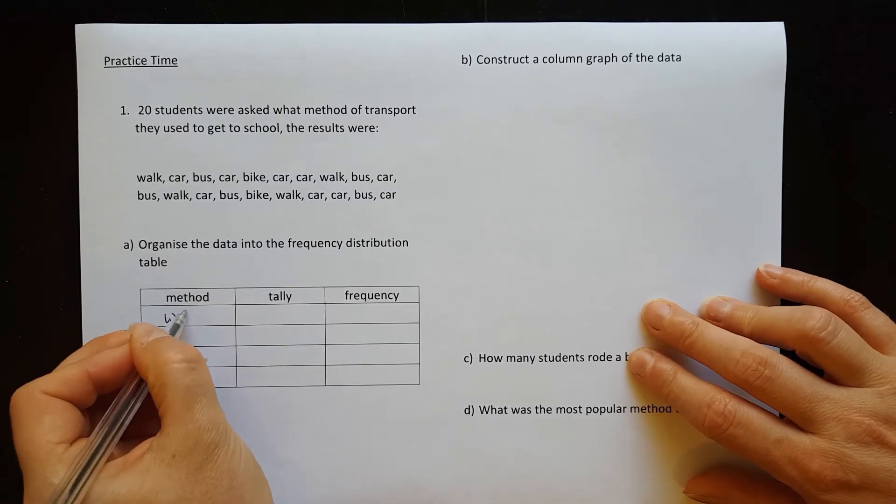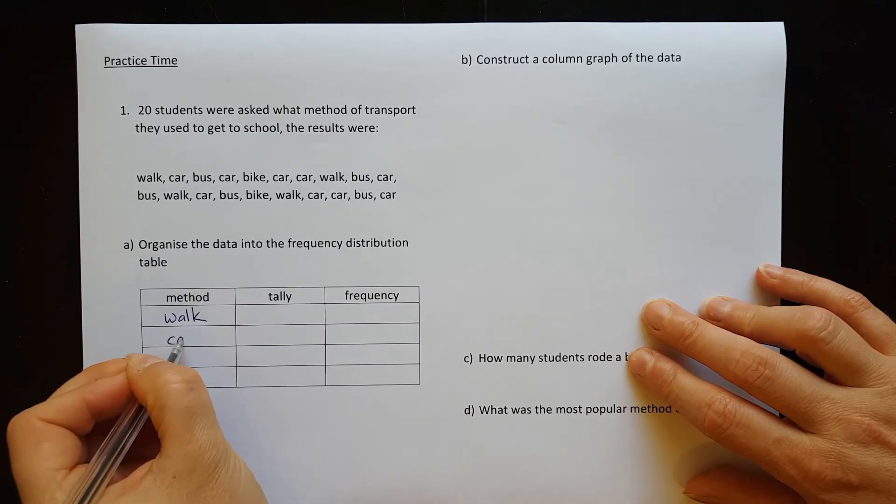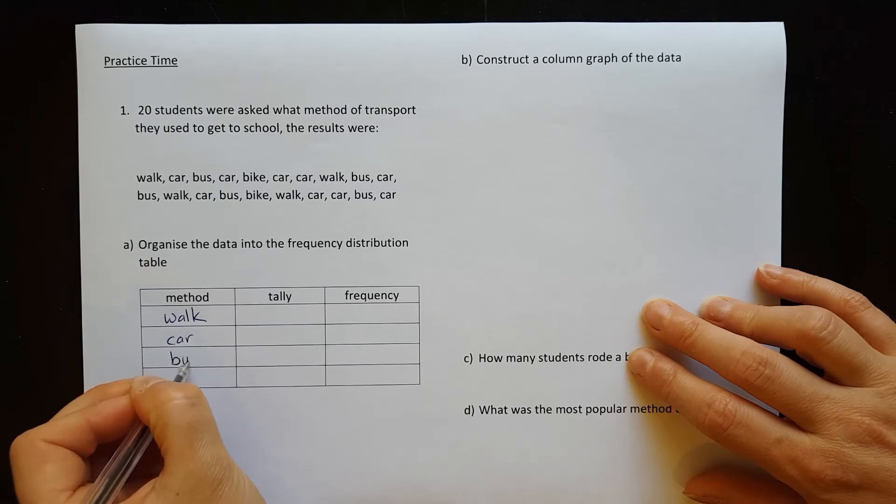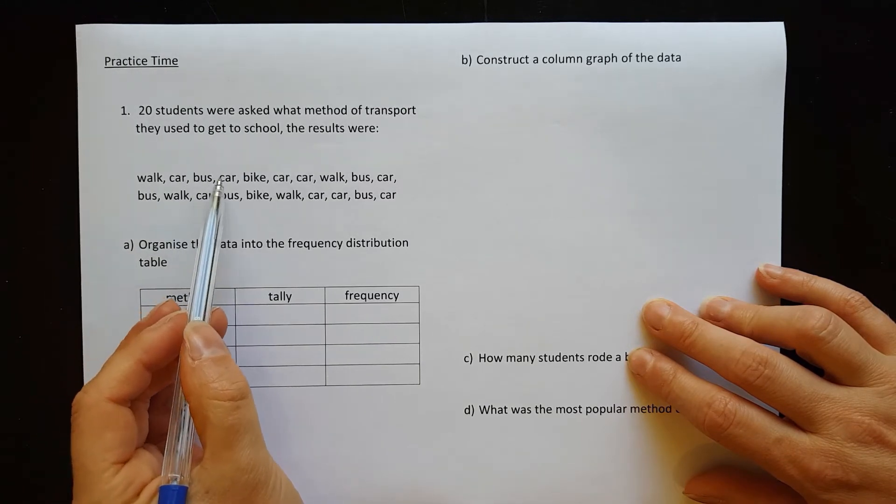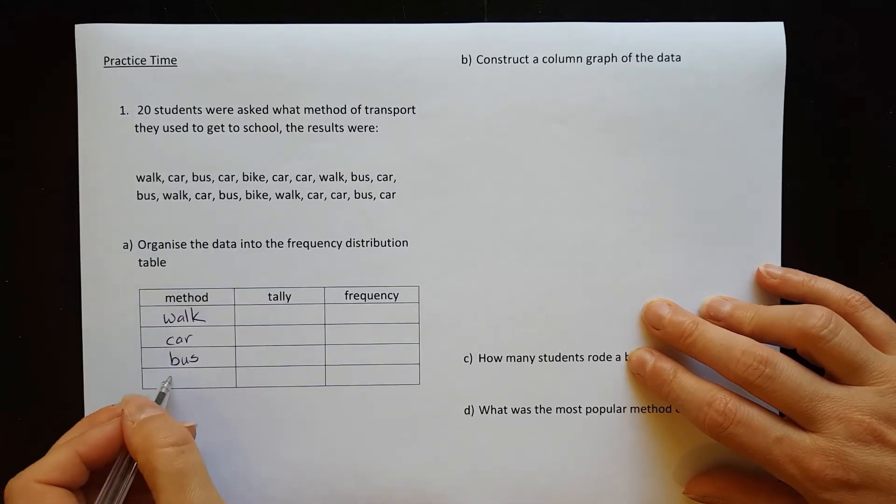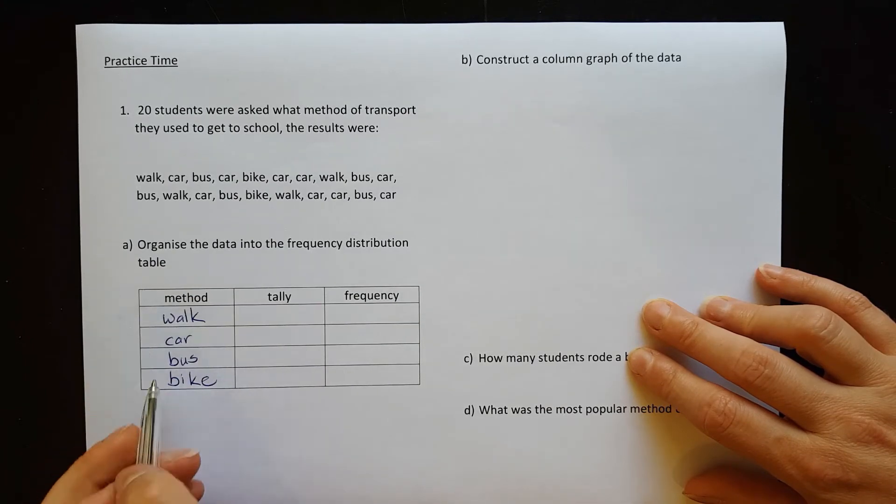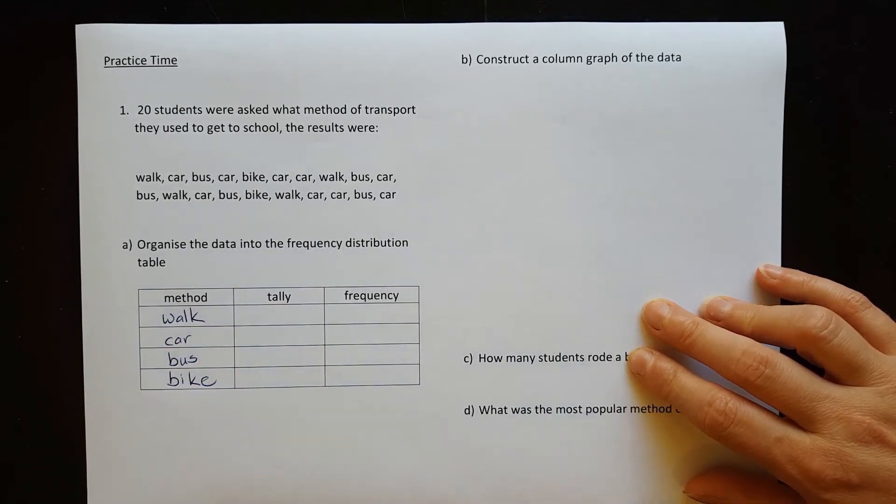So let's list off all the methods of transport. We have walk, we have car, we have bus, and bike. So hopefully that's all the different options in there.